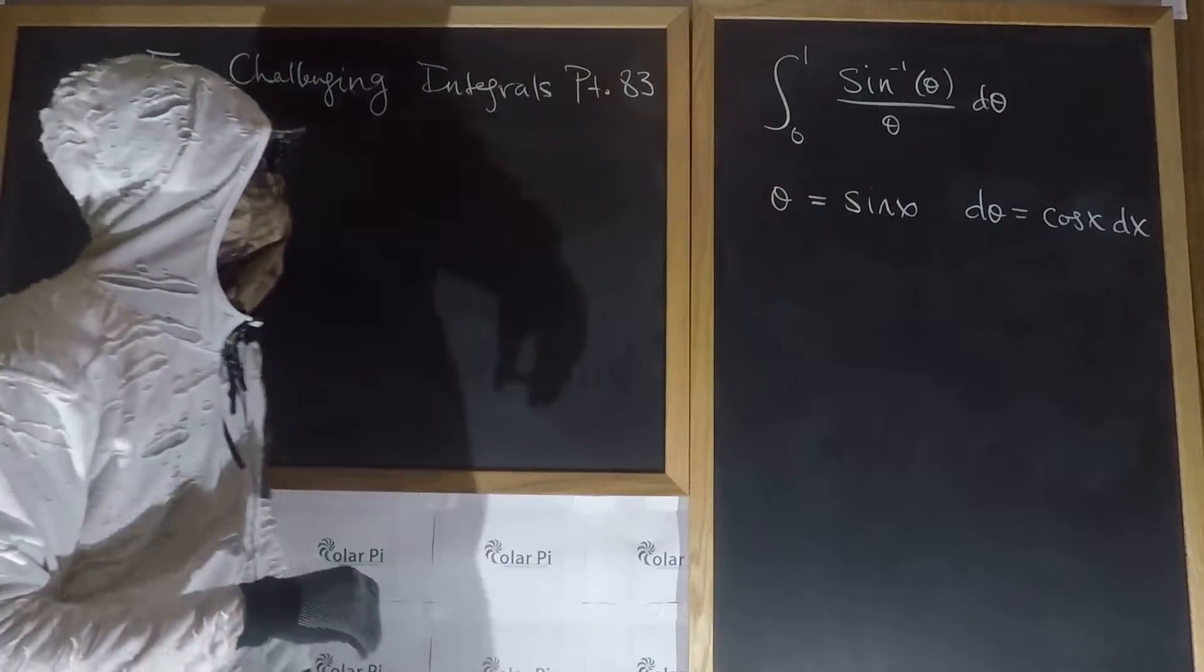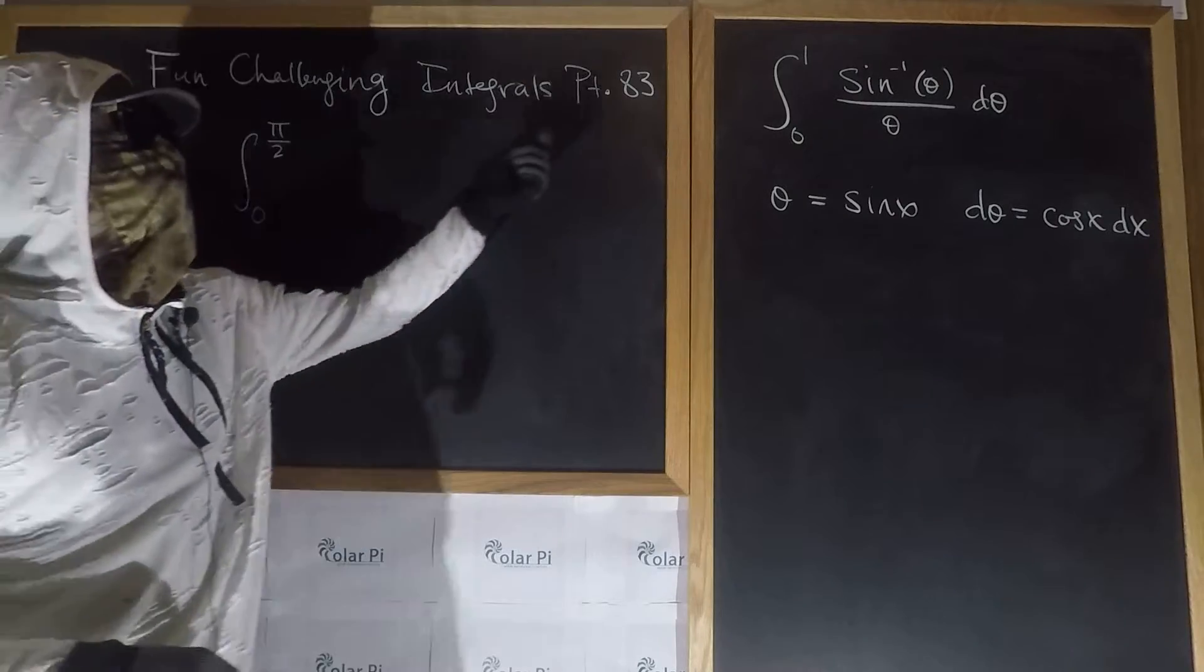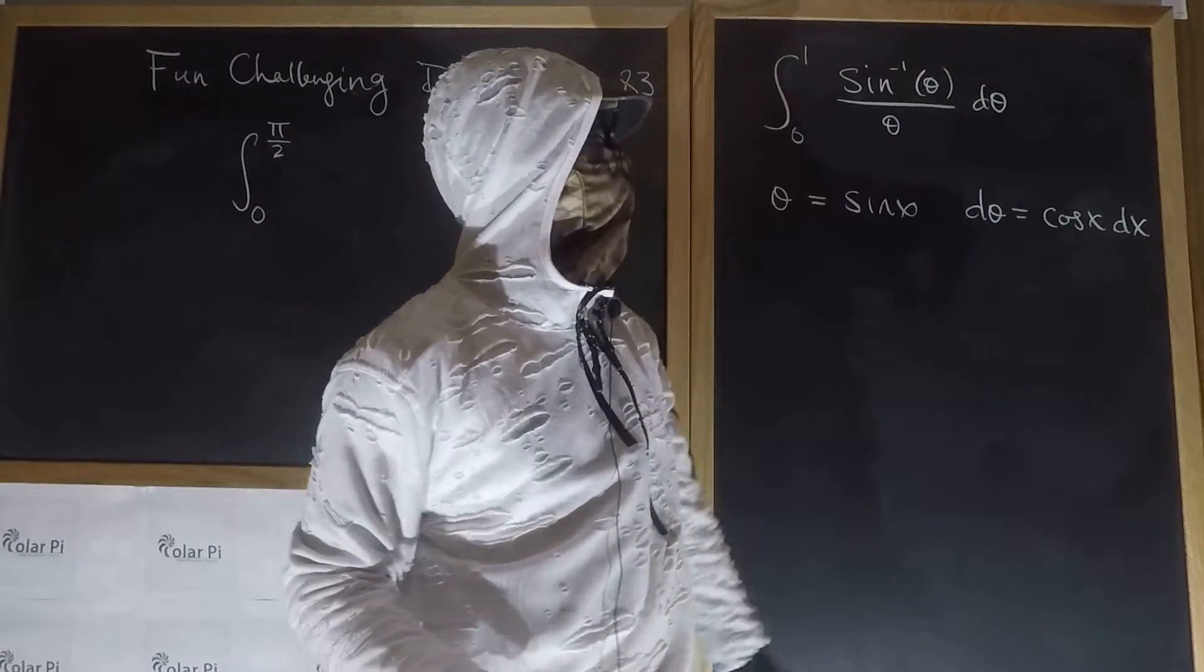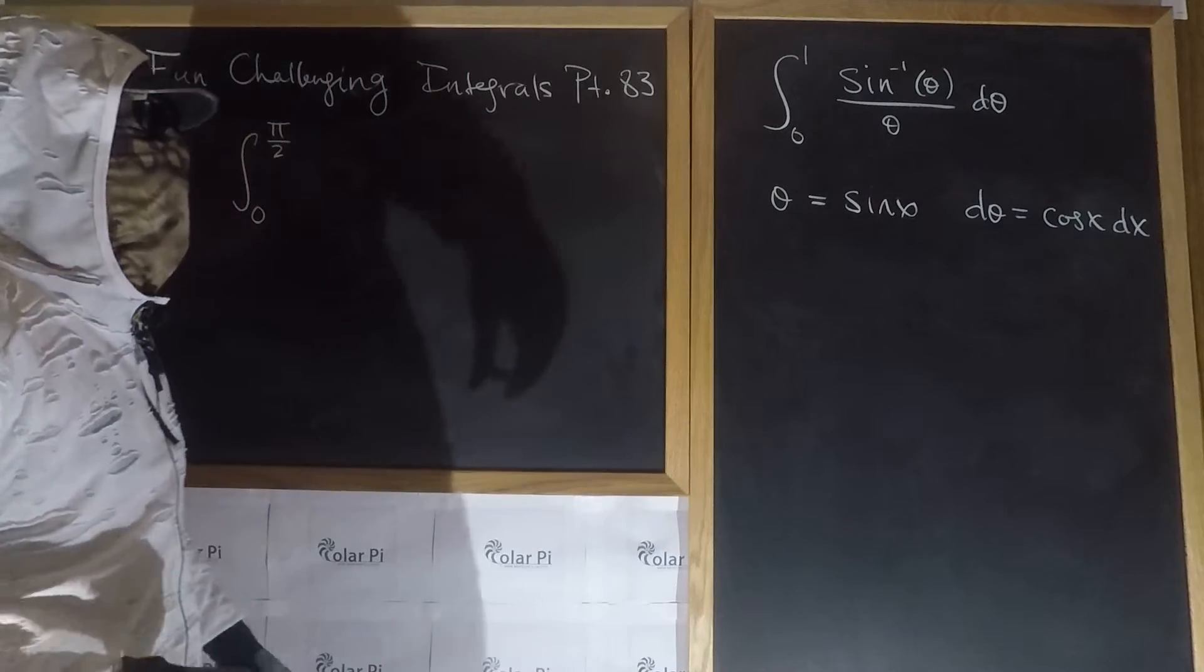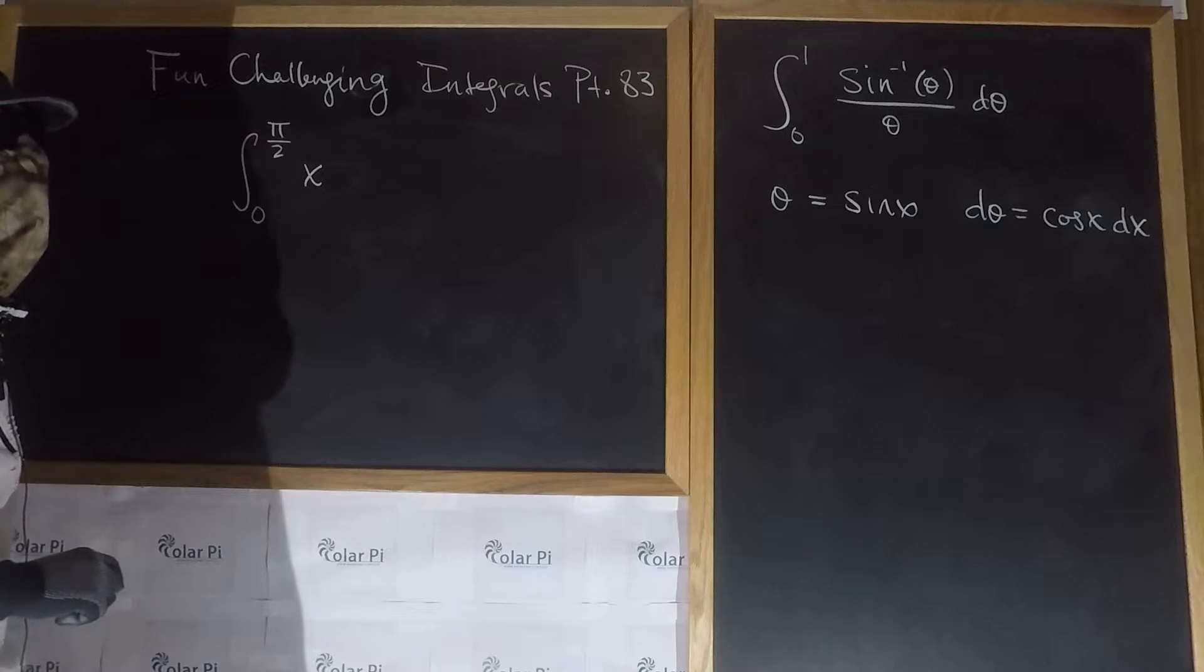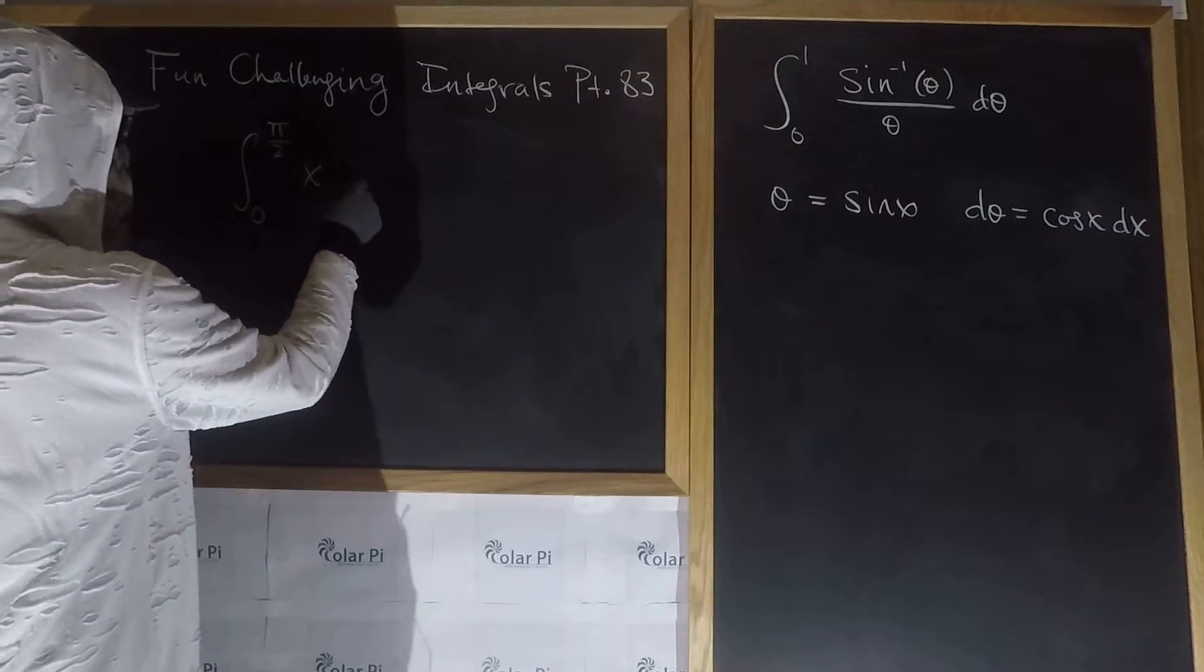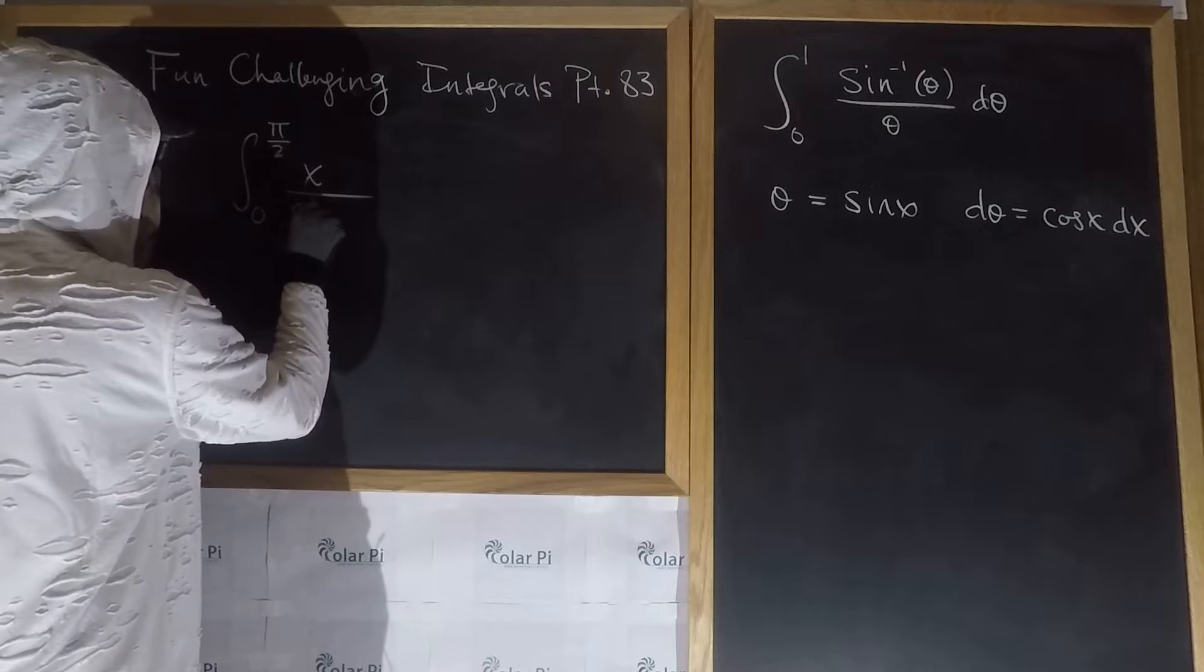We've already changed the limit. In the numerator we're gonna get sine inverse of sine of x, so that's just x. And then theta in the denominator is sine x, so we have this divided by sine x.